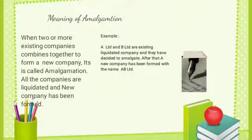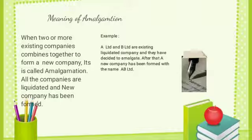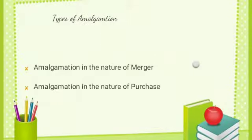When two or more existing companies combine together to form a new company, it is called amalgamation. All the companies are liquidated and a new company is formed. This is distinct from a merger because neither company involved survives as a legal entity; instead, a completely new entity is formed to use the combined assets and liabilities of both companies. For example, A Limited and B Limited are existing liquidated companies that decide to amalgamate, and a new company is formed with the name AB Limited.